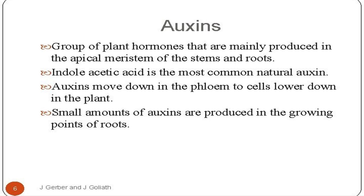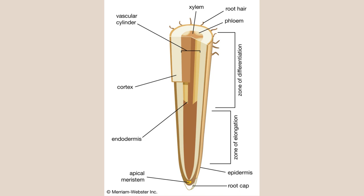The first hormone we are going to look at is auxins. Auxins and gibberellins promote plant growth, but they are found at different locations in the plant. Auxins are a group of plant hormones mainly produced at the apical meristem of stems and roots. The apical meristem is shown on the diagram — that yellow spot is where you find the apical meristem of roots, and that is where auxins are produced.